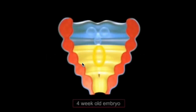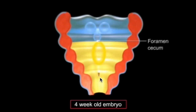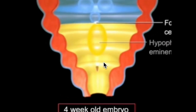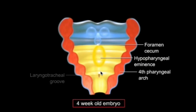Our story of respiratory development begins at the laryngotracheal groove in the floor of the primordial pharynx. The larynx is the upper cartilaginous segment that connects to the trachea caudally. This laryngotracheal groove is located caudally between the fourth and sixth pharyngeal arches and is first visible at the start of week four.